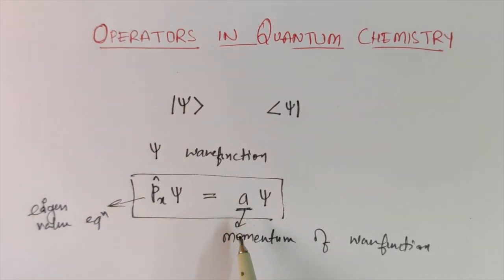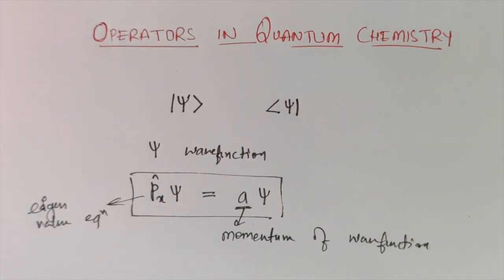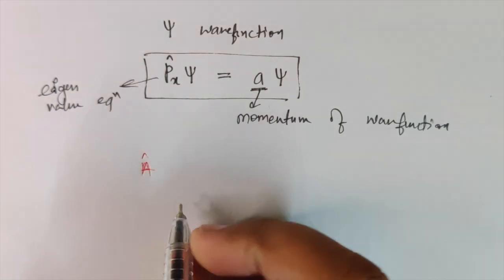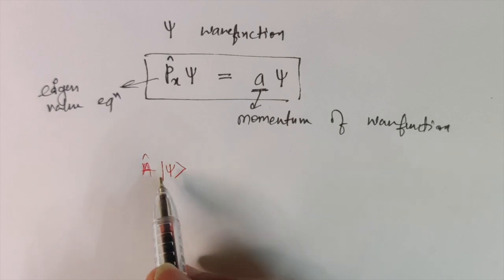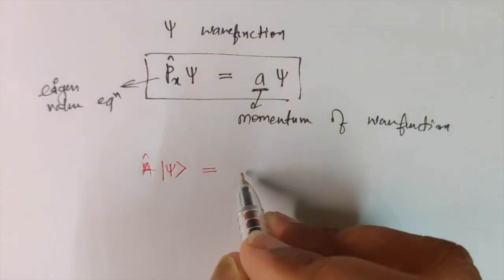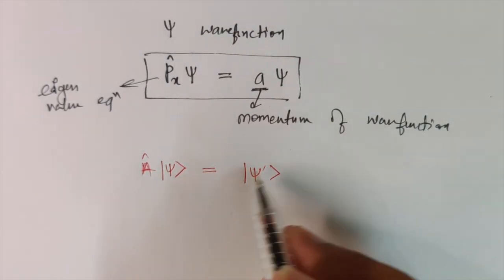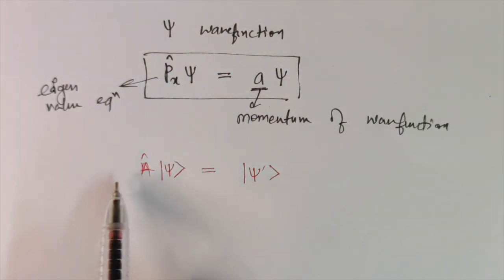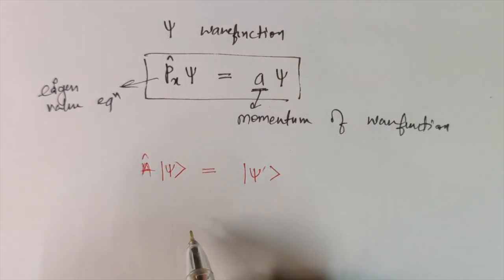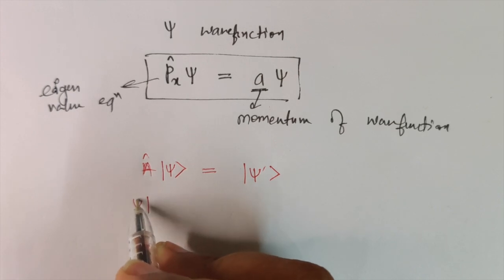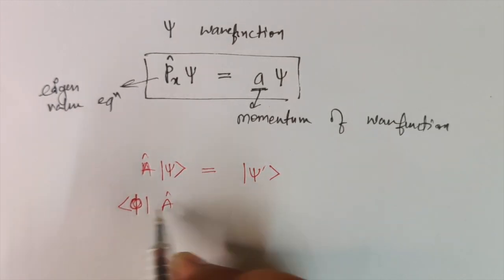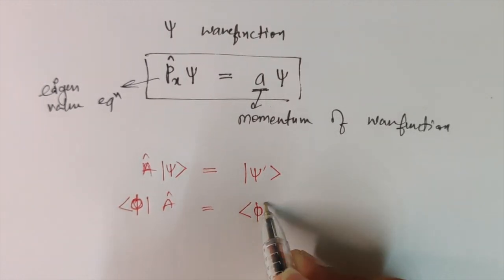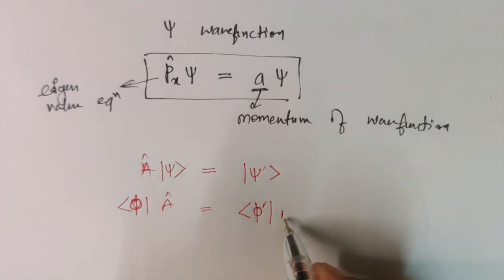If you apply a momentum operator you get momentum; if you apply a kinetic energy operator you get kinetic energy; if you apply the Hamiltonian operator you get total energy — provided you get an eigenvalue equation. If you do not get an eigenvalue equation, operating operator A on a ket vector |ψ⟩ gives you a new vector |ψ'⟩. Operators can also be operated on bra vectors, and importantly, operators are written to the right side of the bra vector, giving a new bra vector.